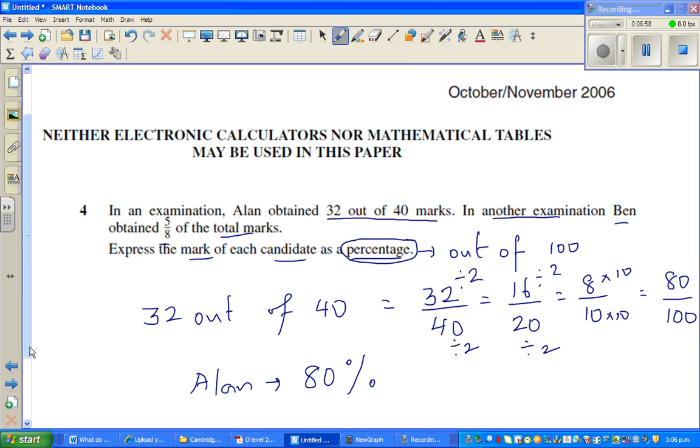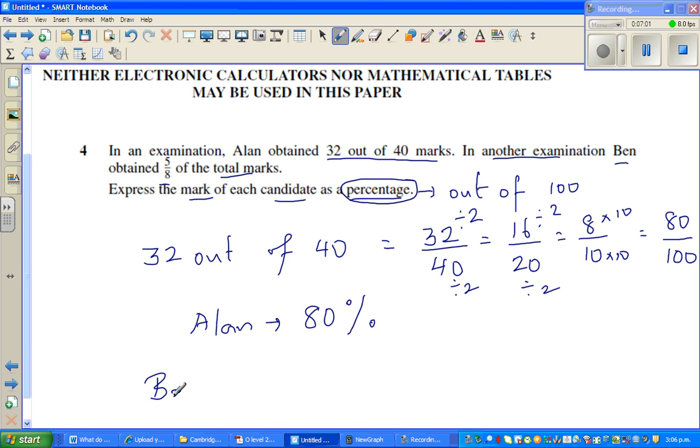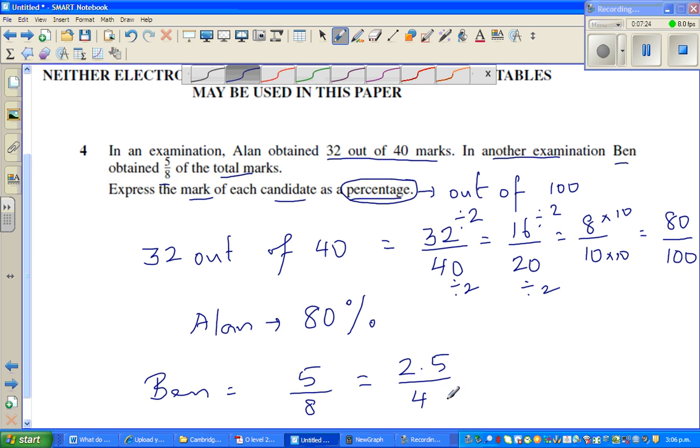Now Ben is getting 5 eighth of the mark. So Ben is 5 out of 8. I'm going to do a trick. So 5 out of 8 is 2.5 out of 4. I know 4 times 25 is 100. So this is also times by 25.